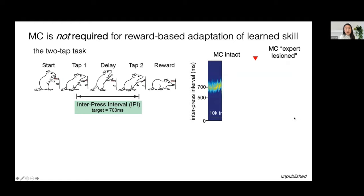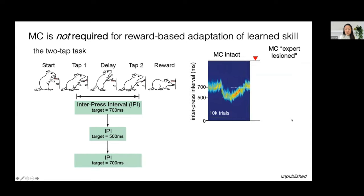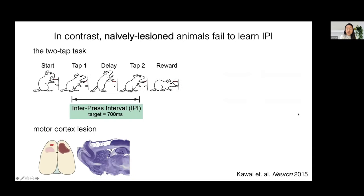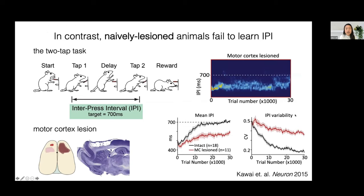We then asked whether intact and expert lesioned animals could modify the timing of their interpress intervals, which we consider to be a parameter. We did this by shifting the IPI target from 700 to 500 milliseconds and then back to 700 milliseconds. Incredibly, expert lesioned animals can do this as well without their motor cortex. In contrast, if you lesion an animal before training on this task, it's unable to successfully learn the IPI. Here I'm plotting intact animals in black and motor cortex lesioned animals in red, and there's a big discrepancy in both the IPI being learned and the variability in the timing of their actions.